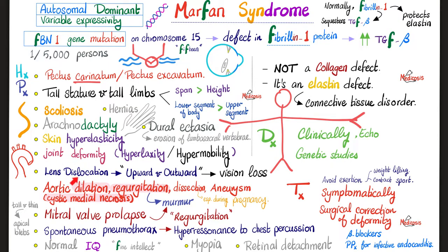Lens subluxation or dislocation is upwards and outwards. This can affect vision. Additionally, retinal detachment and myopia (short-sightedness) can occur. Myopia means the object falls in front of the retina — nearsightedness. The opposite is hypermetropia (farsightedness). A mnemonic: myopia is the shorter word, so it's nearsightedness; hypermetropia is the longer word, so it's farsightedness.